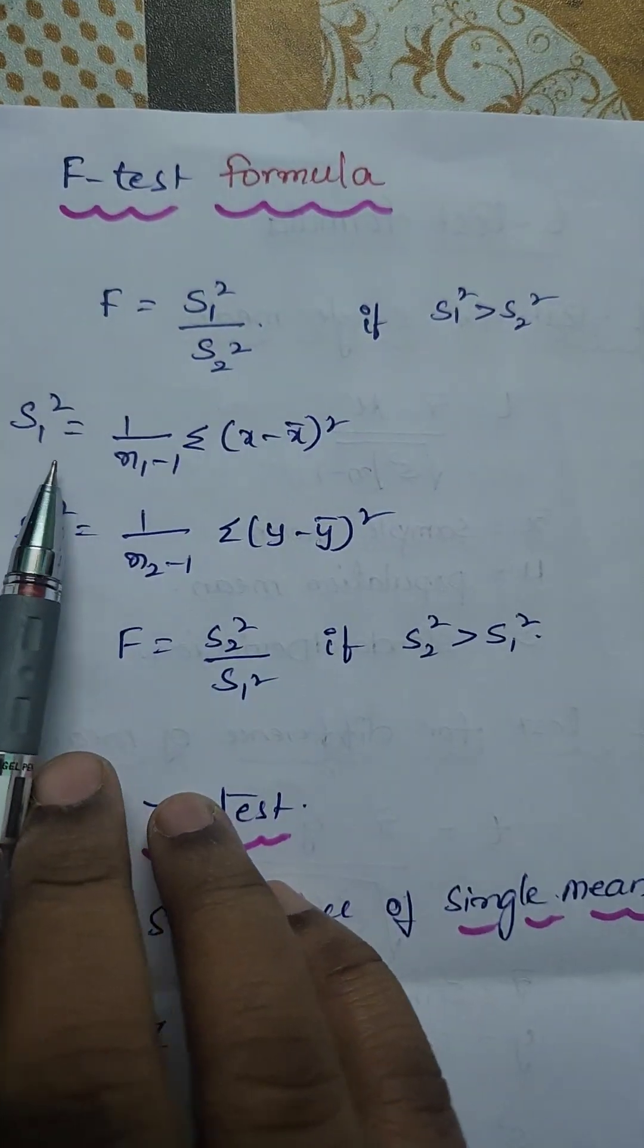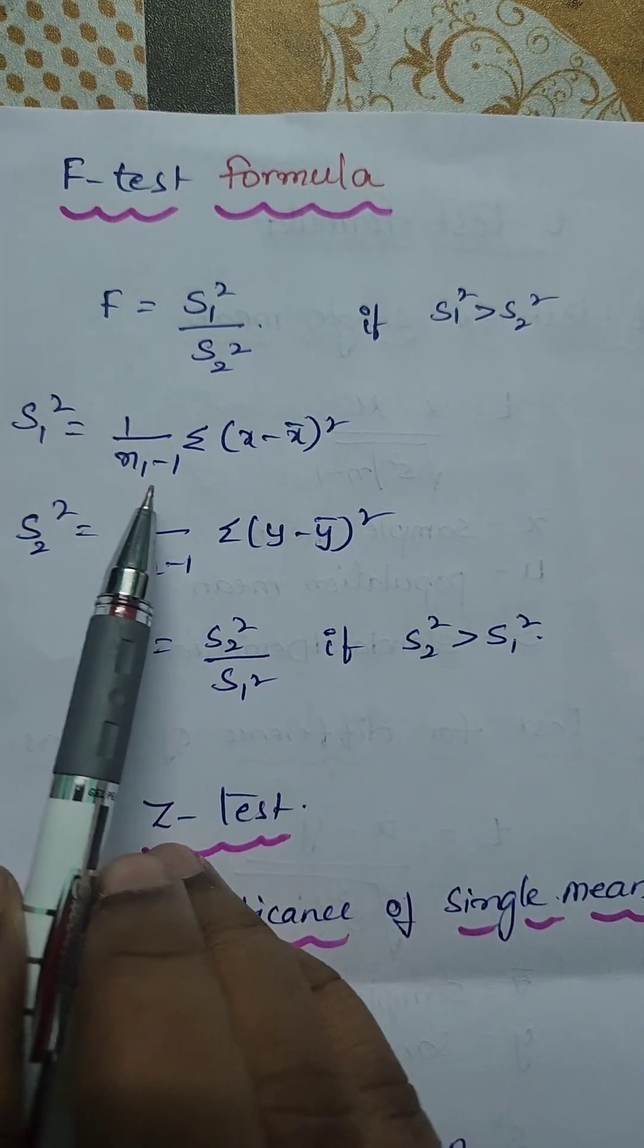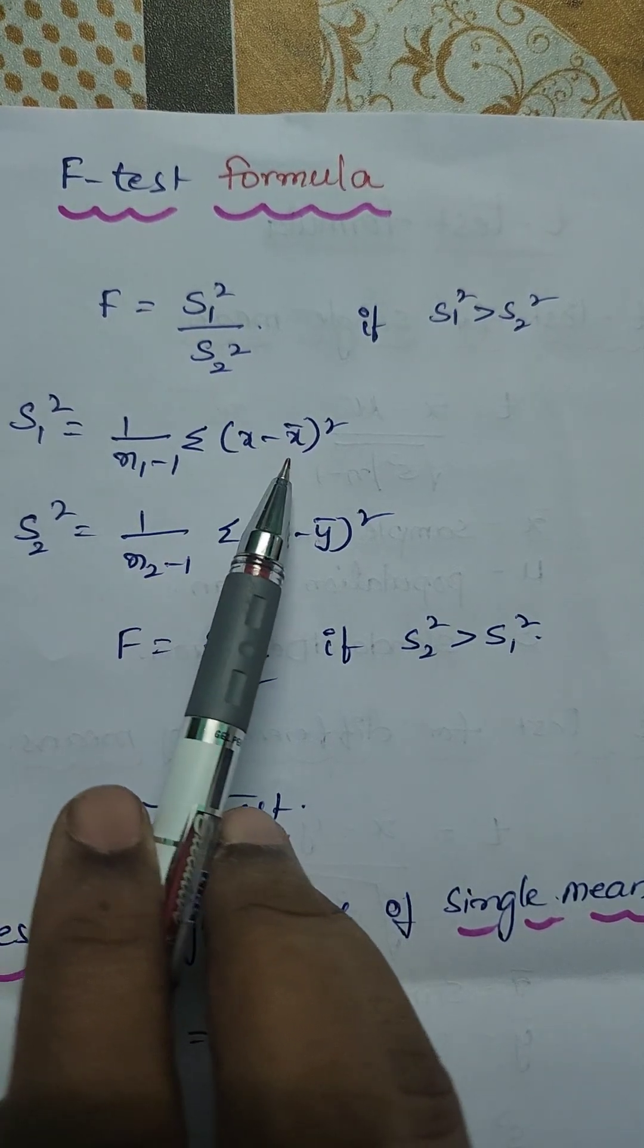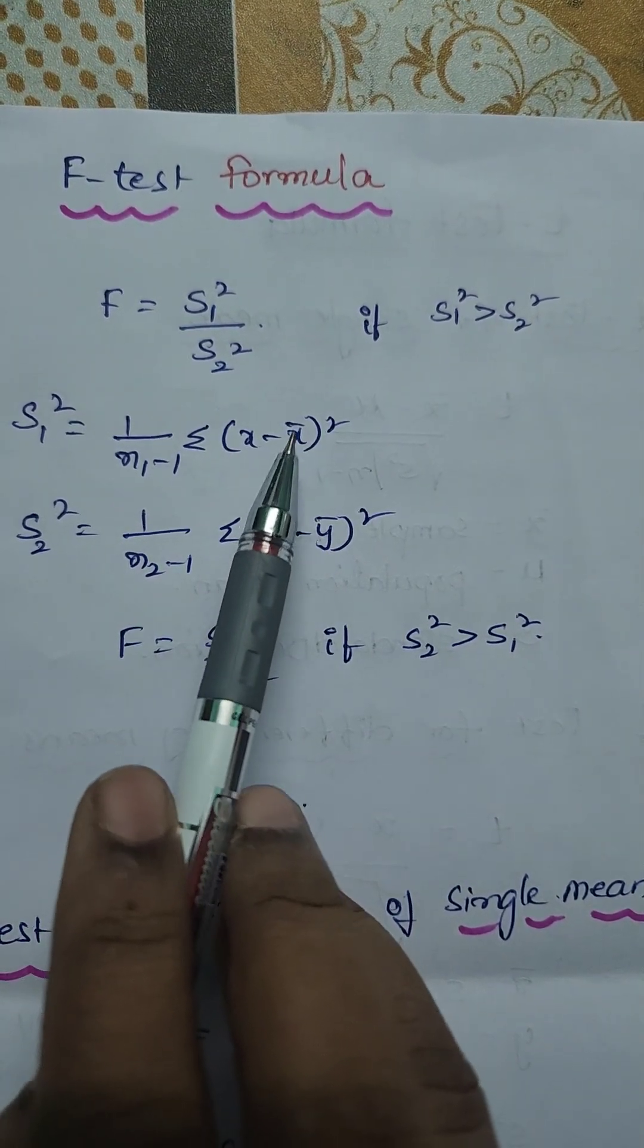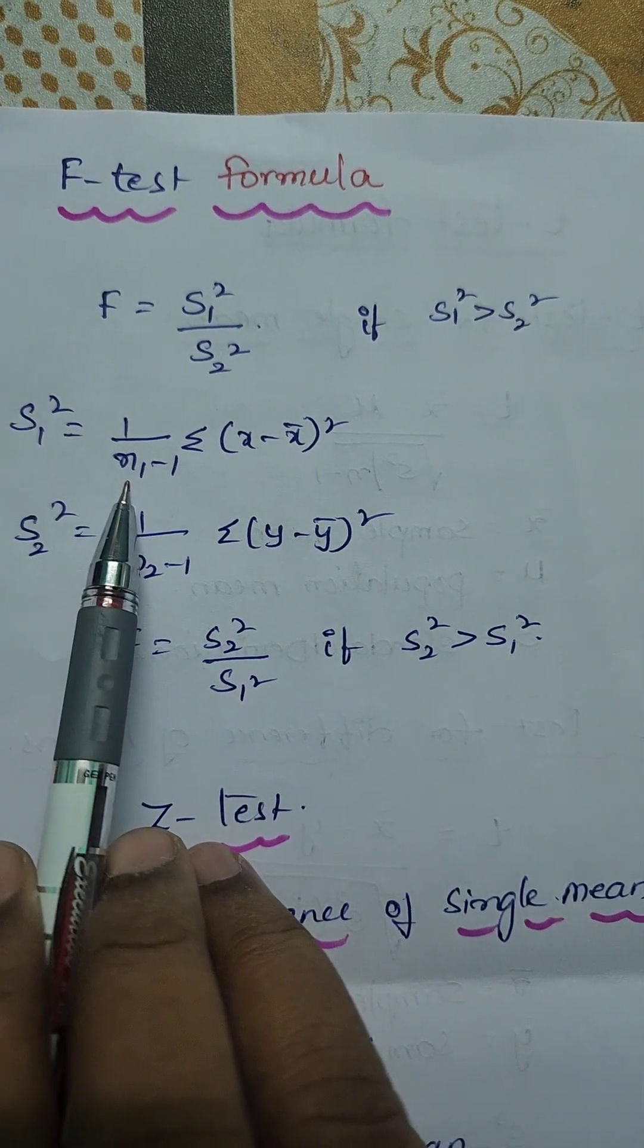Here S1 and S2 are standard deviations. We can find S1 square as 1 by N1 minus 1 summation x minus x bar whole square. Here x bar is mean of x and N1 is the first sample size.